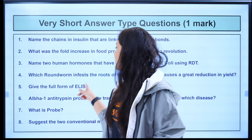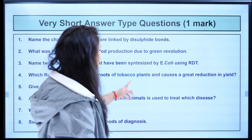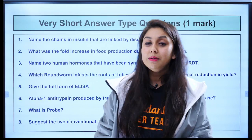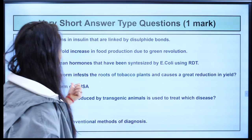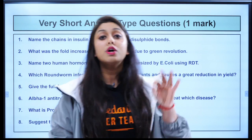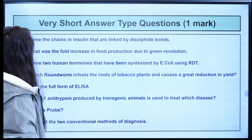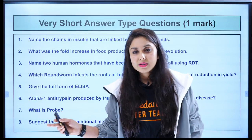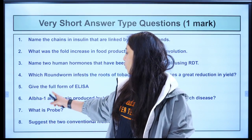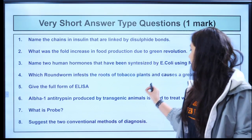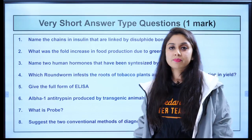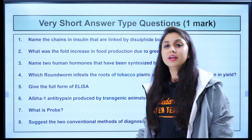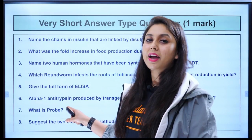Next question: which roundworm infests the roots of tobacco plants and causes a great reduction in yield? Hint: the experiment was done on a different nematode, but the application was done on this nematode later. Those scientists also received a Nobel Prize. Next question: give the full form of ELISA — I think everybody knows it, it became very famous because of COVID. Next: alpha-1 antitrypsin produced by transgenic animals is used to treat which disease?